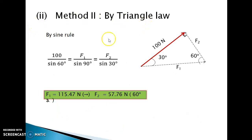Method 2 by triangle law: By sine rule, 100 upon sin 60 degrees equals F1 upon sin 90 degrees equals F2 upon sin 30 degrees.